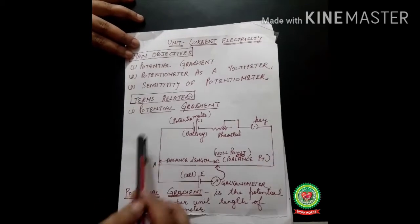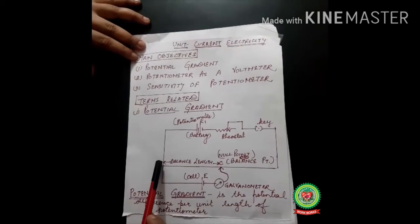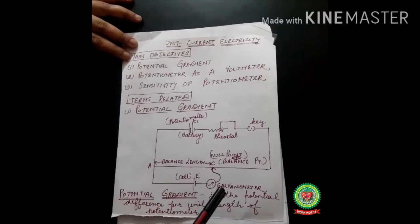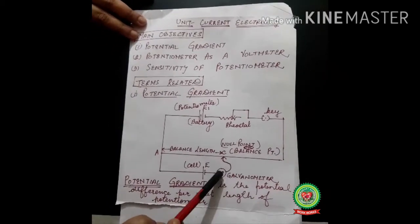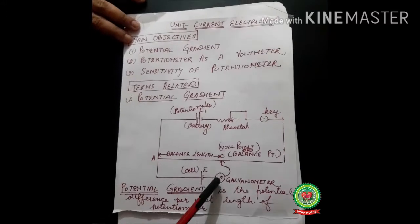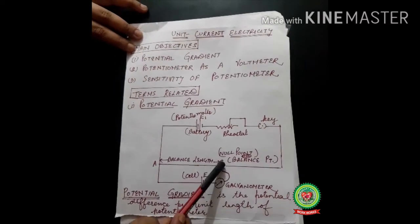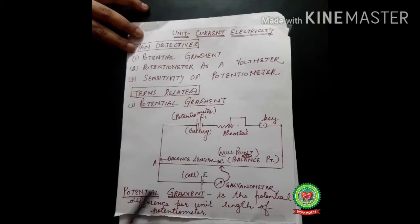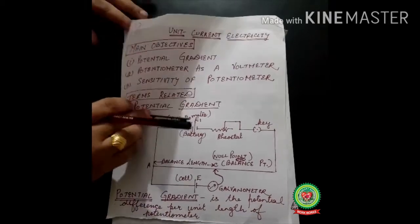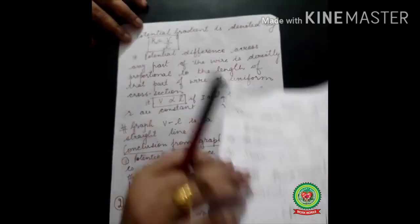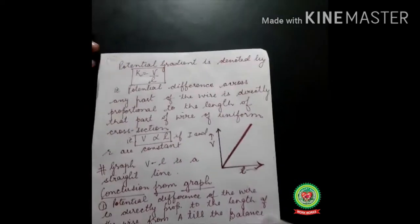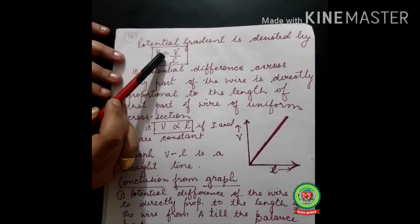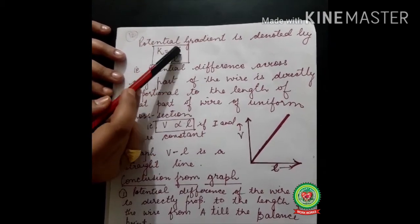Here we have not used a voltmeter, but still we can find the value of voltage using the formula. The galvanometer gives no current, meaning no voltage at that point — so the voltage will be zero. Potential gradient is denoted by K and is given by K = V/L.